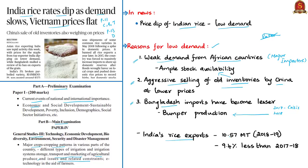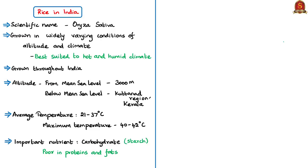India's rice exports stood at 10.57 million tons in 2018-19, which is 9.4% lesser than exports in 2017-18. Now let us see some facts about rice crop in India. The scientific name of rice is Oryza sativa. Rice is grown throughout the length and breadth of India in widely varying zones and altitudes. The best suited climate for rice is hot and humid.